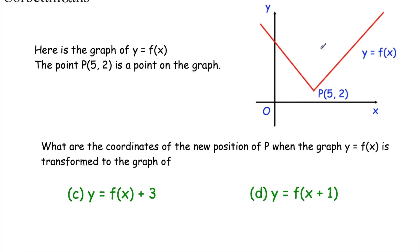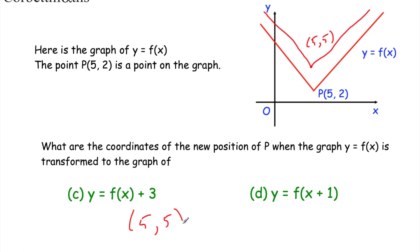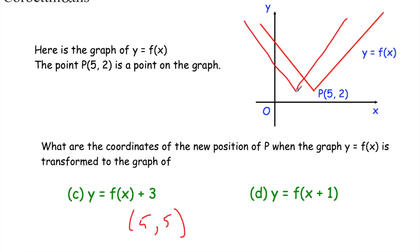Now parts c and d, still with point P at 5, 2. For part c, y equals f of x plus 3 translates the graph three squares upwards, so P moves from 5, 2 to 5, 5. For part d, y equals f of x plus 1, with the plus 1 inside the brackets, translates all points one square to the left. So instead of 5 across and 2 up, it becomes 4 across and 2 up — the point moves to 4, 2.